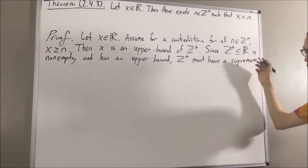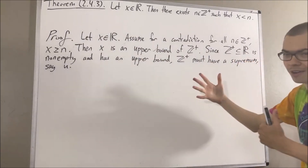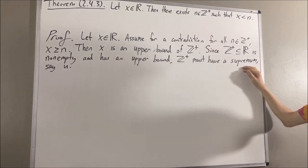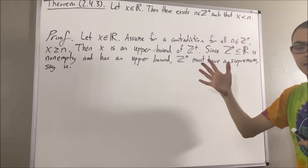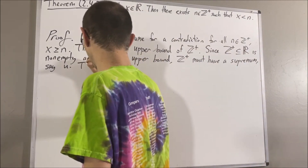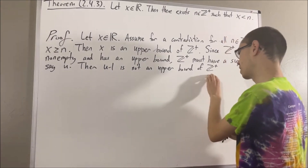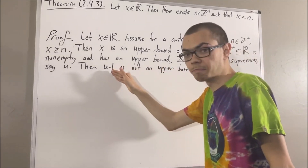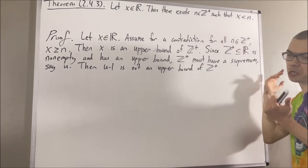And I'll call the supremum u. Now, remember, the supremum of a set is really the least upper bound of the set. Well, since u is the least upper bound of the positive integers, this means that every real number smaller than u is not an upper bound of the positive integers. So, u minus 1 is not an upper bound of the positive integers. And since u minus 1 is not an upper bound, it is not the case that every positive integer is less than or equal to u minus 1. In other words, there must be some positive integer greater than u minus 1. I'll call it integer s.